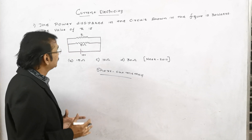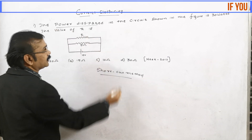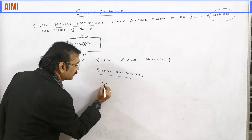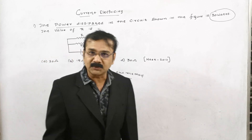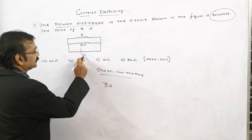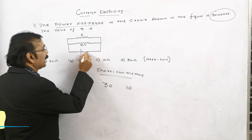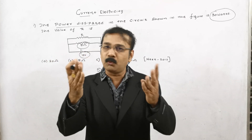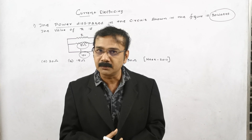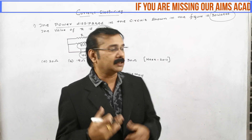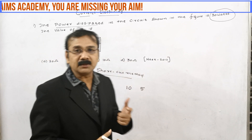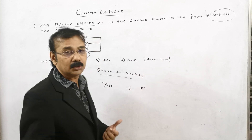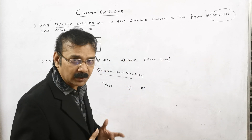Now let us see all the important points in the question. The power is 30 watts and the voltage is 10 — let me write 30 as the first number. The next number is 10, and let me write 5 also. So there are three numbers in this question. The first one is 30, the second one is 5, and the third one is 10. You can arrange the values according to your convenience.